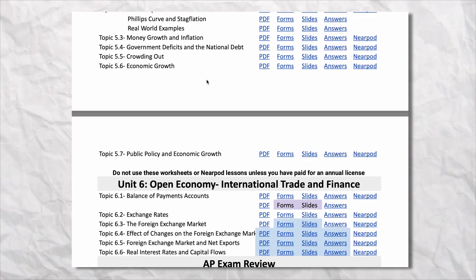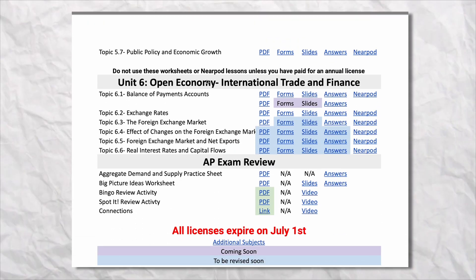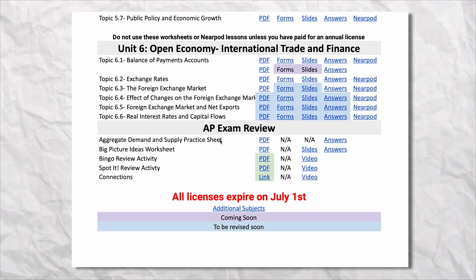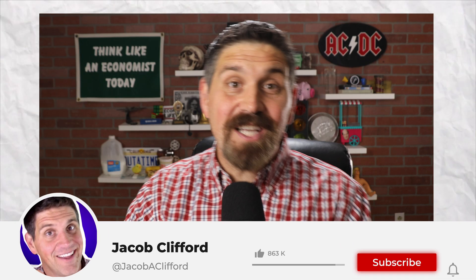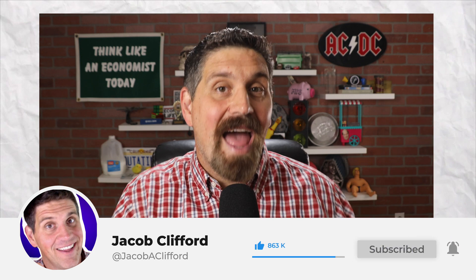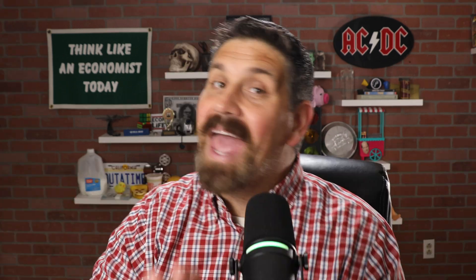I created a resource to help you practice — inside my Ultimate Review Packet, there's a brand new aggregate demand and supply practice sheet to help you identify where the economy is, whether there's a shift in aggregate demand or aggregate supply, and what happens in the short run or the long run. For teachers, I also created a completely different version inside my AP macroeconomics worksheets. If this video was helpful, please leave a like and let me know in the comments if there's something else I can help you with. Thanks for watching!